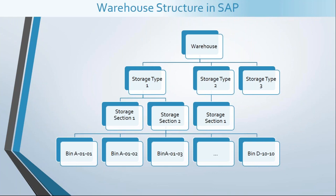Now the interesting part: the warehouse structure in SAP. This graphic represents the hierarchy of elements in SAP warehouse structure. At the top we have a warehouse, which is divided into multiple storage types. Each storage type can be divided into multiple storage sections, and under those sections we create storage bins. It's also important to mention there is something called a picking area, though it is not mandatory.